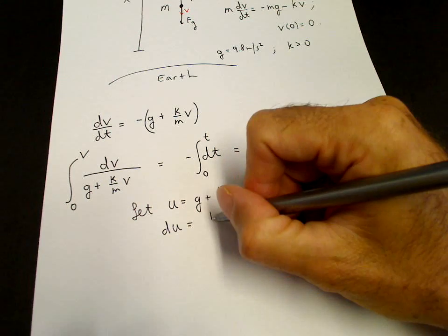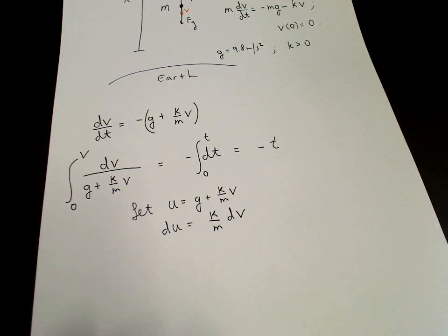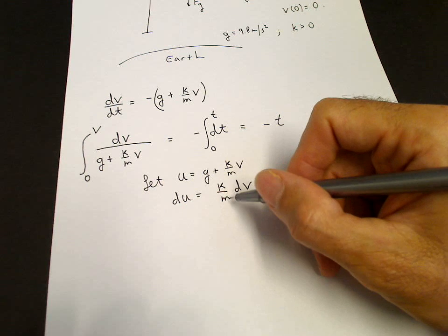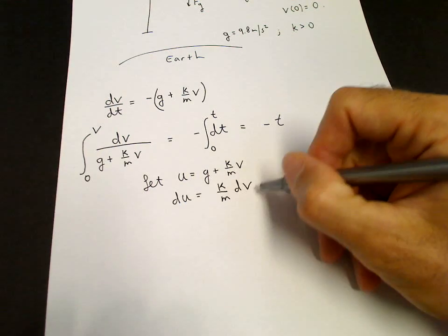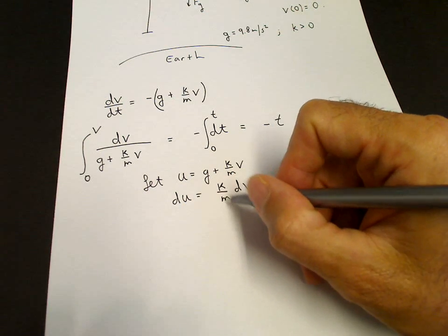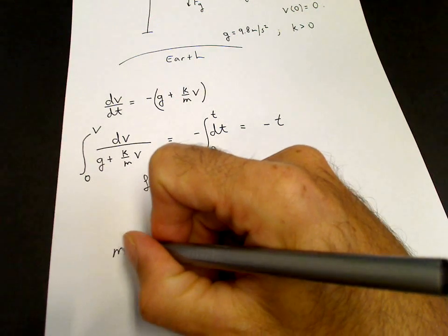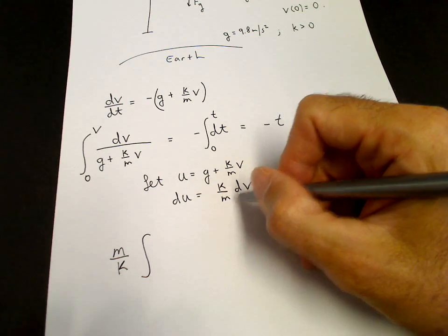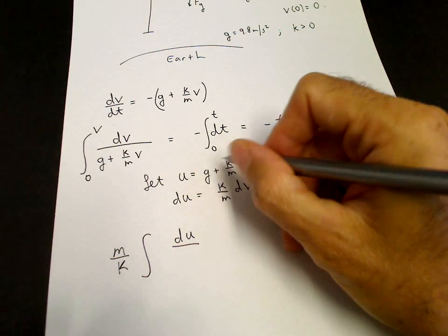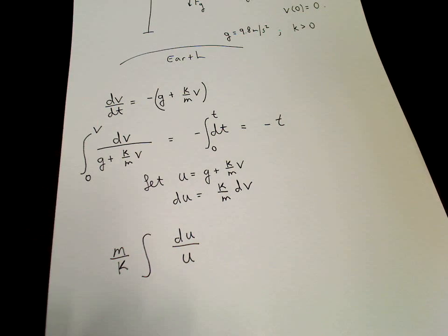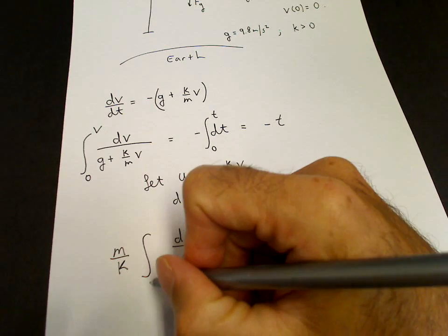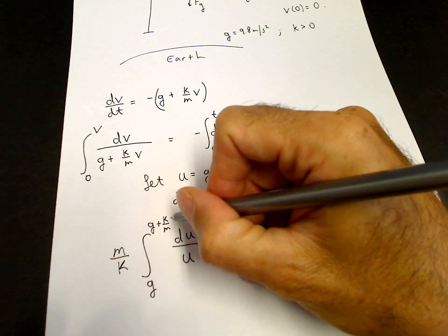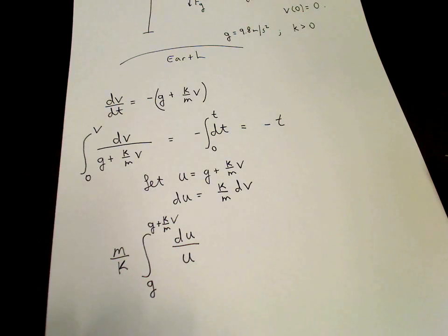We can let u equals g plus k over m times v. So du equals k over m times dv. So then we need to multiply by k over m on the inside to convert k over m dv to du. And then on the outside we need to multiply by m over k. So we have m over k times the integral. And then we have k over m dv becomes du. And g plus k over m times v becomes u. And the limits are when v equals 0, u is g. And when v equals v, u is g plus k over m times v.